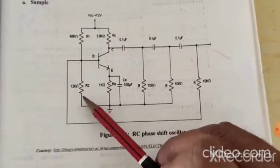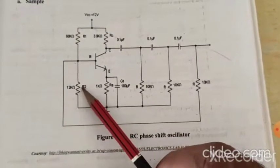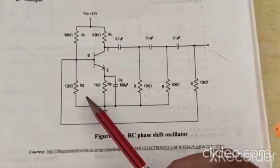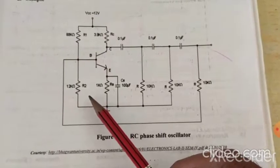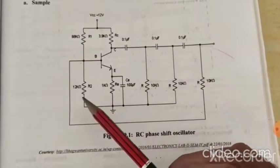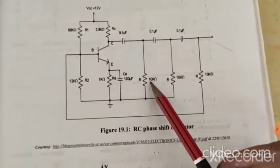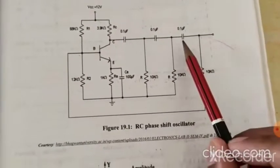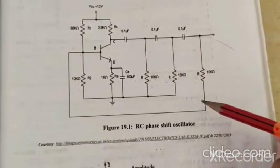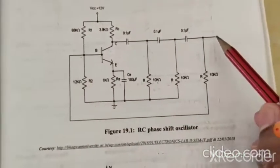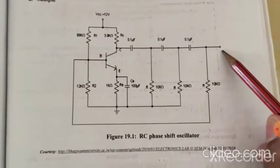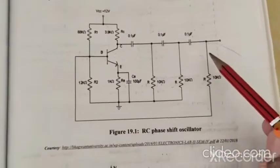In this circuit, no input is given. That is why the RC phase shift oscillator works on the principle of a positive feedback amplifier. When input is not applied, we will get the output. There are three RC sections — RC, RC, RC — and from the last section, feedback is fed back to the input side.